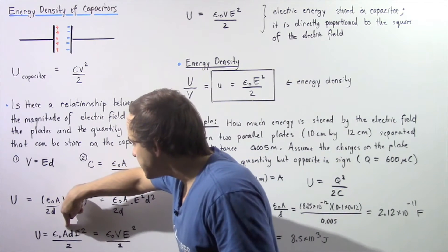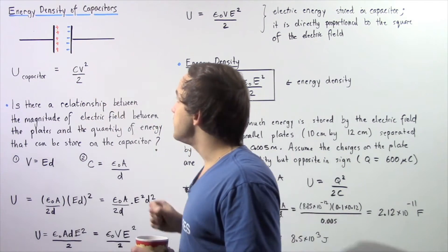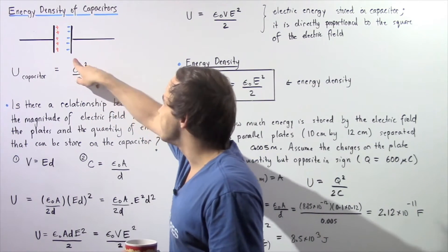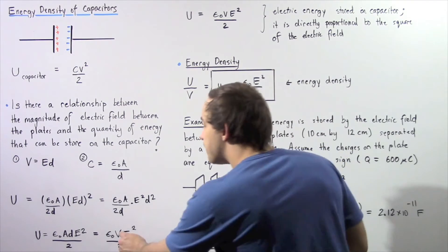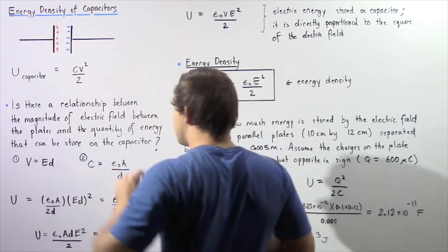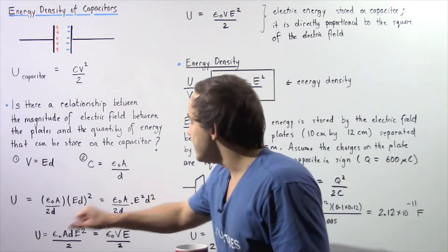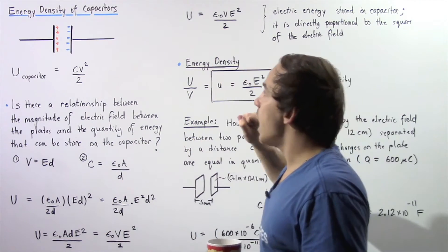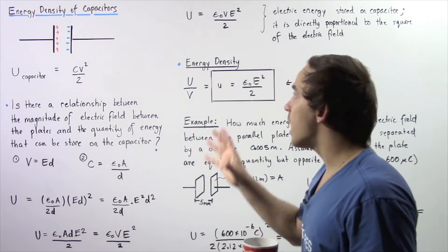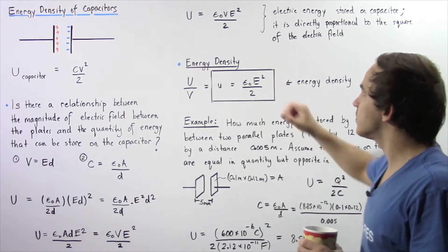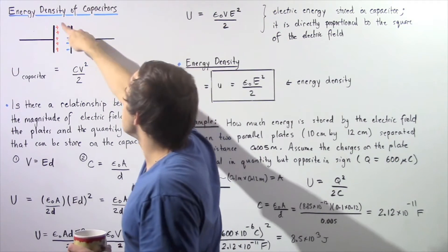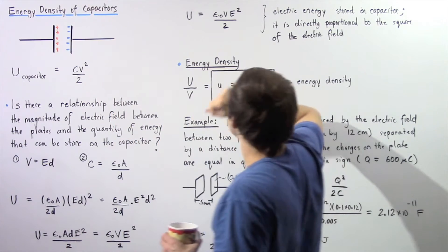The surface area of either one of these plates given by A, multiplied by the distance between our two plates d, gives us the volume of this section separating our two plates. So we see that the quantity of electric energy stored on our parallel plate capacitor is equal to epsilon naught multiplied by the volume between our two plates.